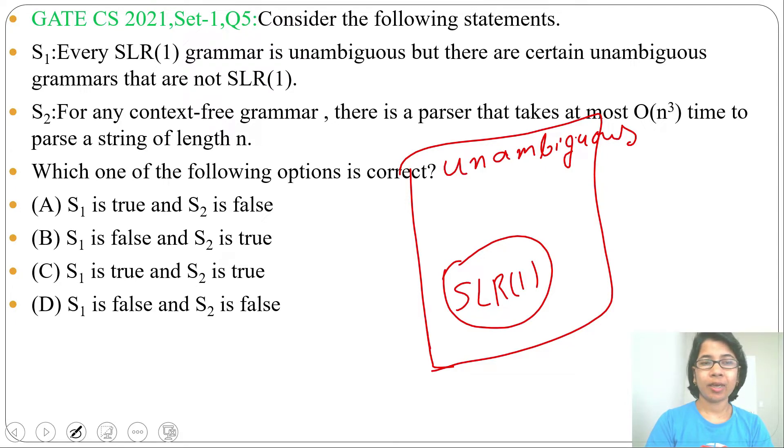But every unambiguous grammar is not SLR(1). This statement is true as SLR(1) is a subset of unambiguous.